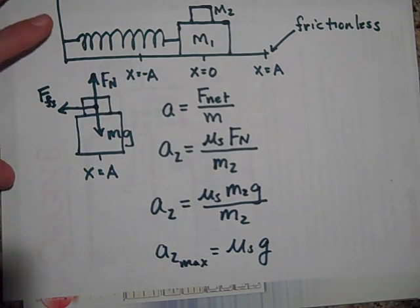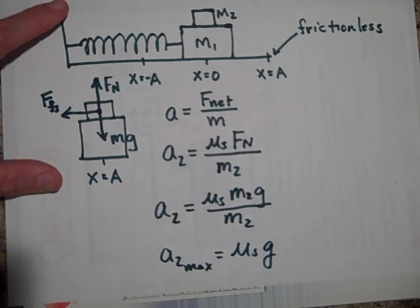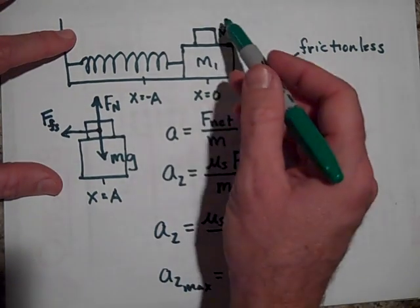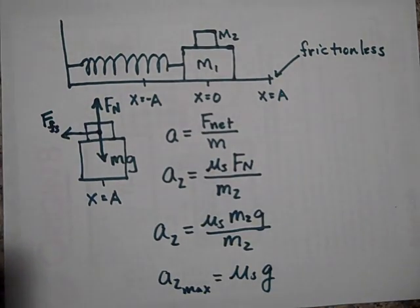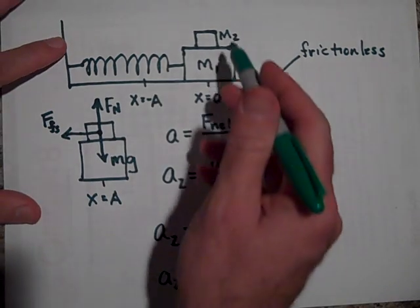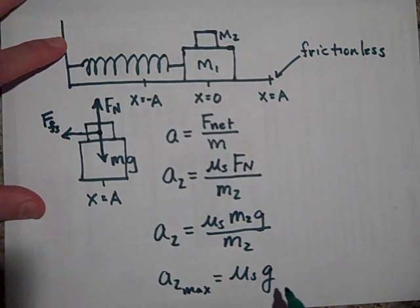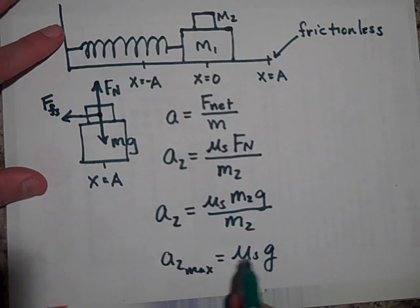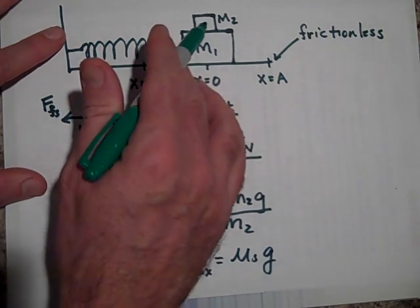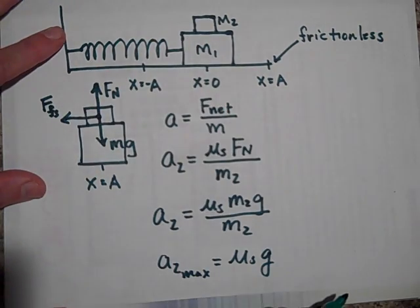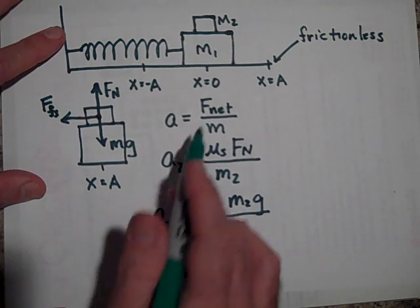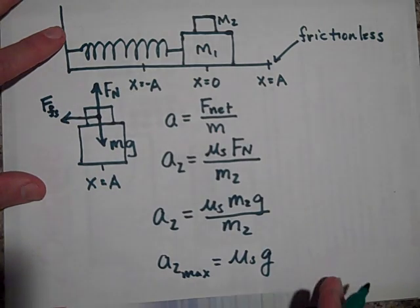Now, what you do is come back to the system. The maximum acceleration the system can have is this—if you have more than that, this box is going to slide off. So let's figure out what the maximum we can pull it back at is.